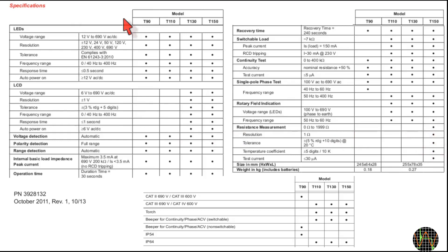I think the best value for money is either the T90 or T110 model. They have all the important features, including LEDs for voltage ranges, DC-AC indicator, continuity test, and single-pole phase test.